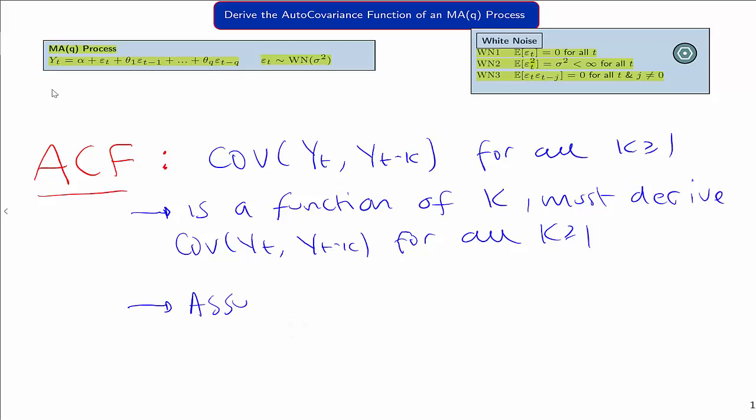Also to note, we assume that yt is stationary, so this covariance doesn't depend upon time. It just depends on how far back k, the gap into the past. So we're going to derive this now for the MA(q) process.